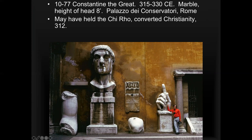He may have once held the Chi-Rho — which we'll talk about later — those are the first two letters of the word 'Christ,' Jesus's name in Greek. He may have converted to Christianity; we're not exactly sure about that. But what he did do — and we'll talk about this in lectures on early Christianity — is basically legalize Christianity, which some Roman emperors had persecuted before, and we'll talk about why.